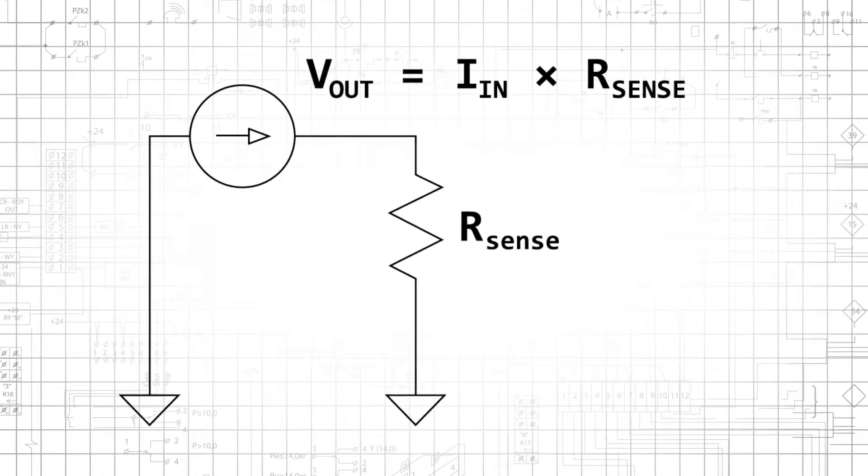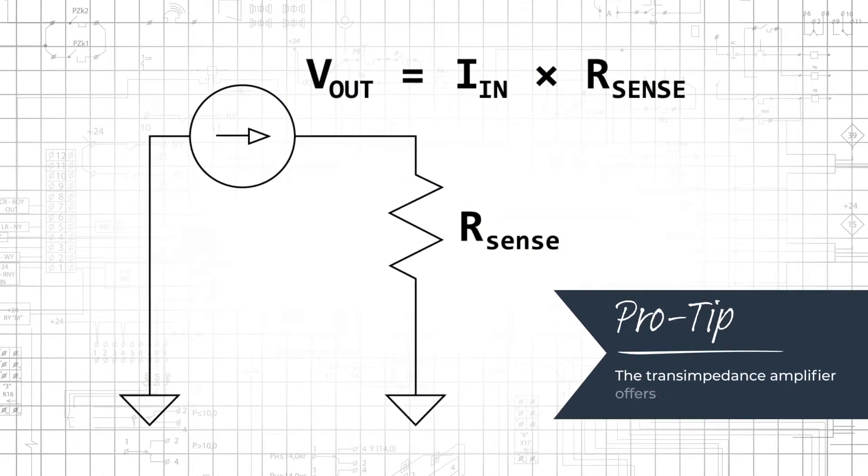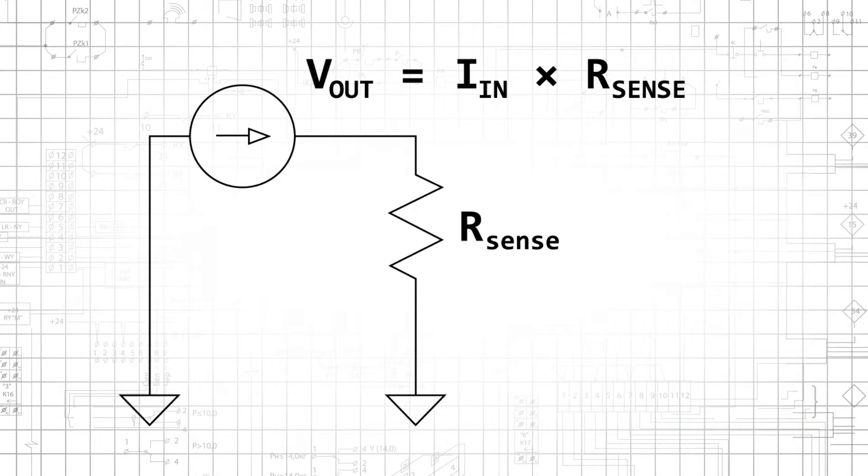You can also use a simple resistor as a current to voltage converter, but the transimpedance amplifier offers superior impedance characteristics. With an ordinary resistor, input impedance is equal to resistance, and therefore very high gain corresponds to very high input impedance.